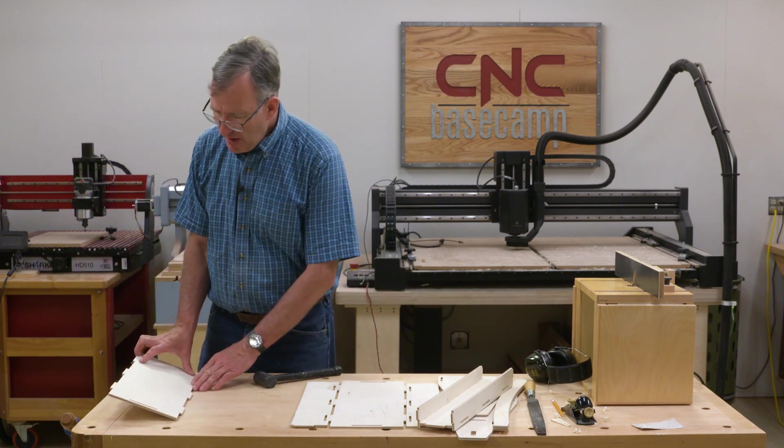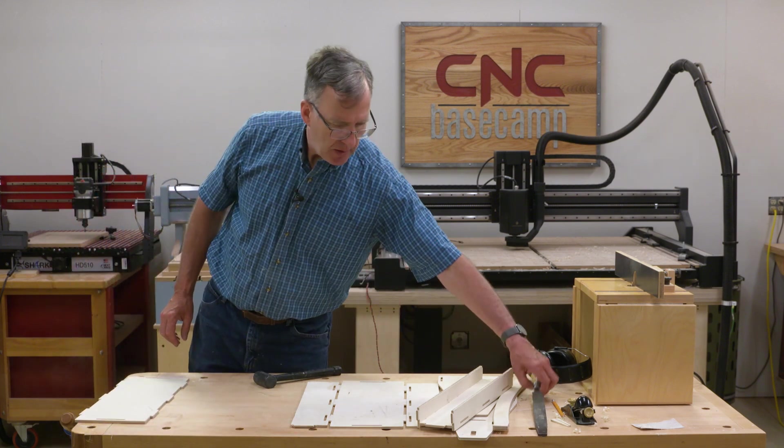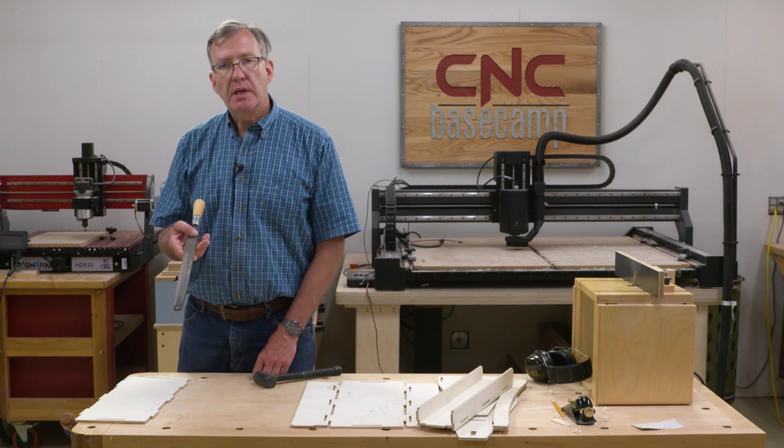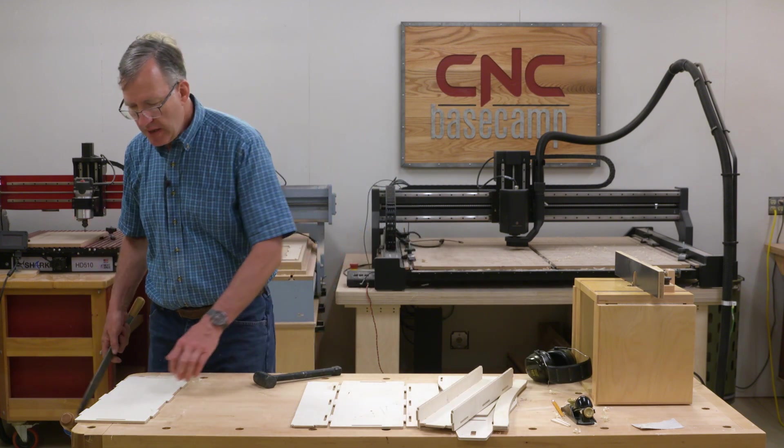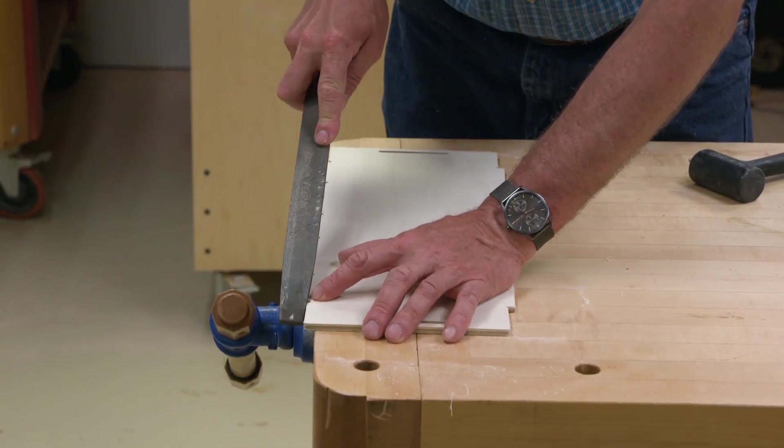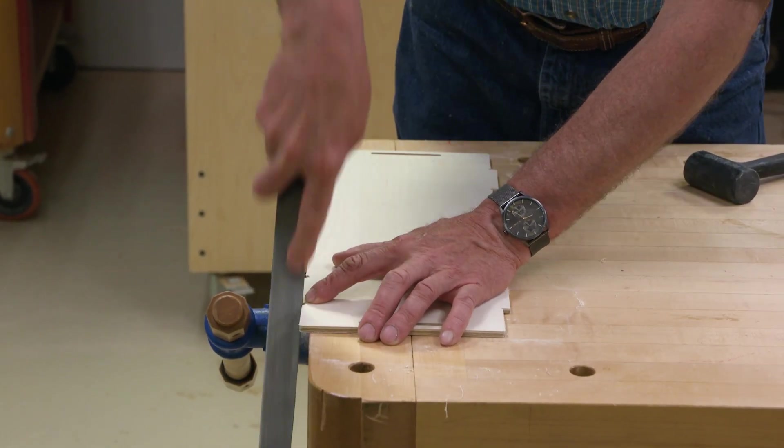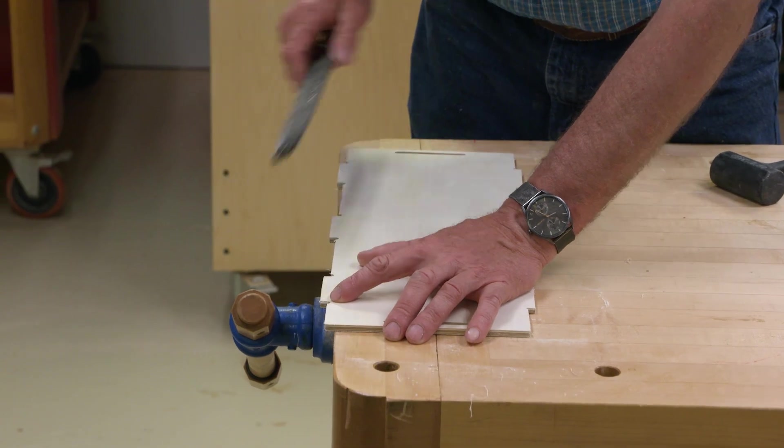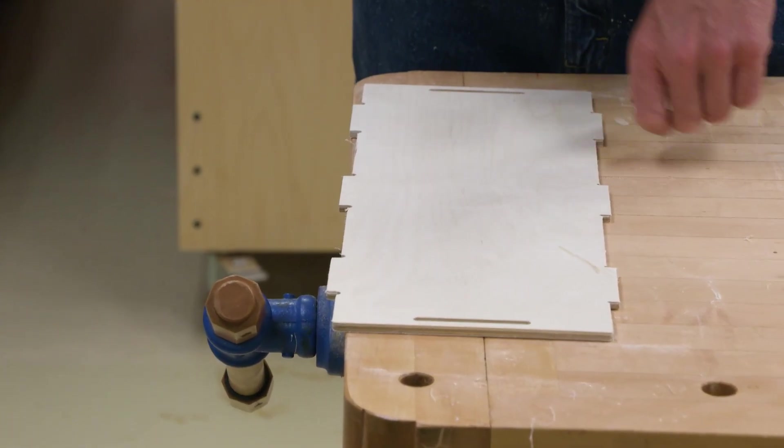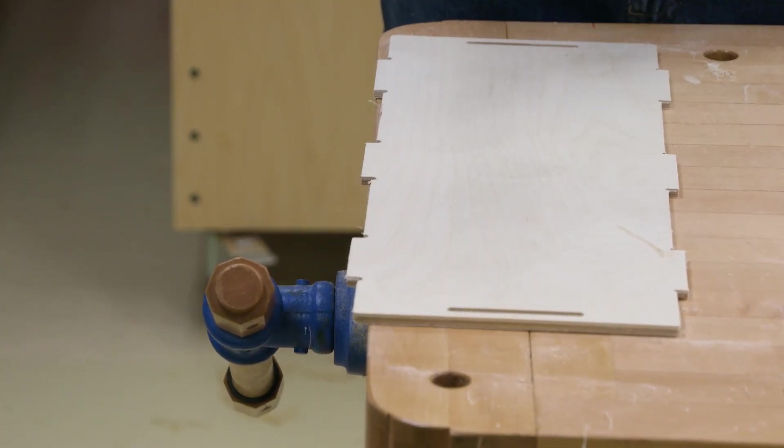I've got a sample bottom here. And the easiest way is just to use a coarse file. So this is a 12 inch and all you have to do is gently round over each of the sides like that. It's fast and it's easy.